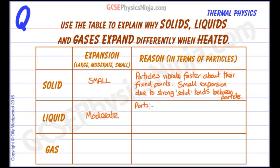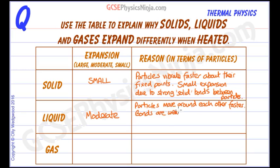So we can say that particles move around each other faster, but that the bonds are weaker than in solids. So the particles can move further apart.